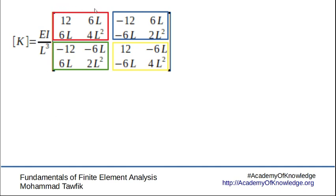The second column will be associated with the slope of the first node. The third column will be associated with the deflection of the second node and the fourth column will be associated with the slope at the second node. Similarly we can say the same about the rows.